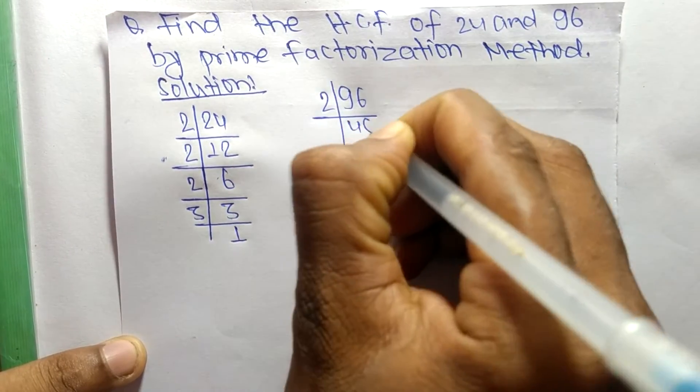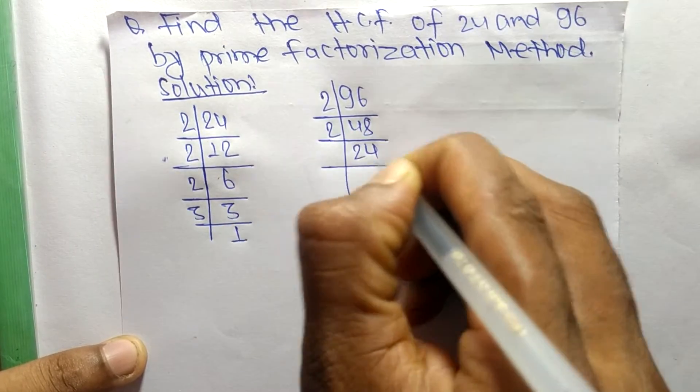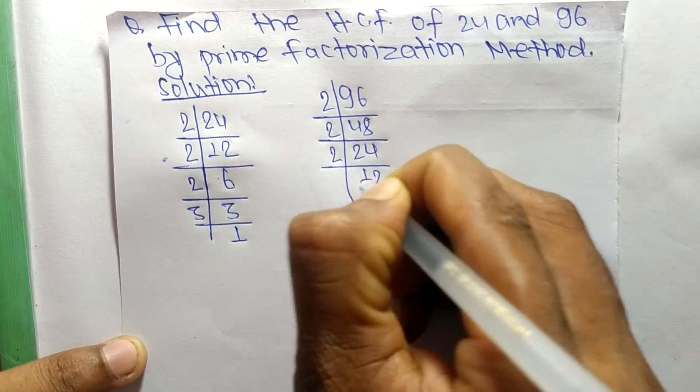2 times 48 equals 96, 2 times 24 equals 48, 2 times 12 equals 24,